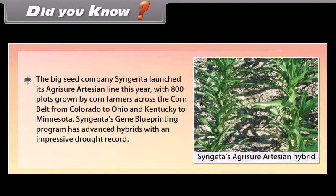Did you know? The big seed company Syngenta launched its Agritio Artesian line this year, with 800 plots grown by corn farmers across the corn belt from Colorado to Ohio and Kentucky to Minnesota. Syngenta's gene blueprinting program has advanced hybrids with an impressive drought record.